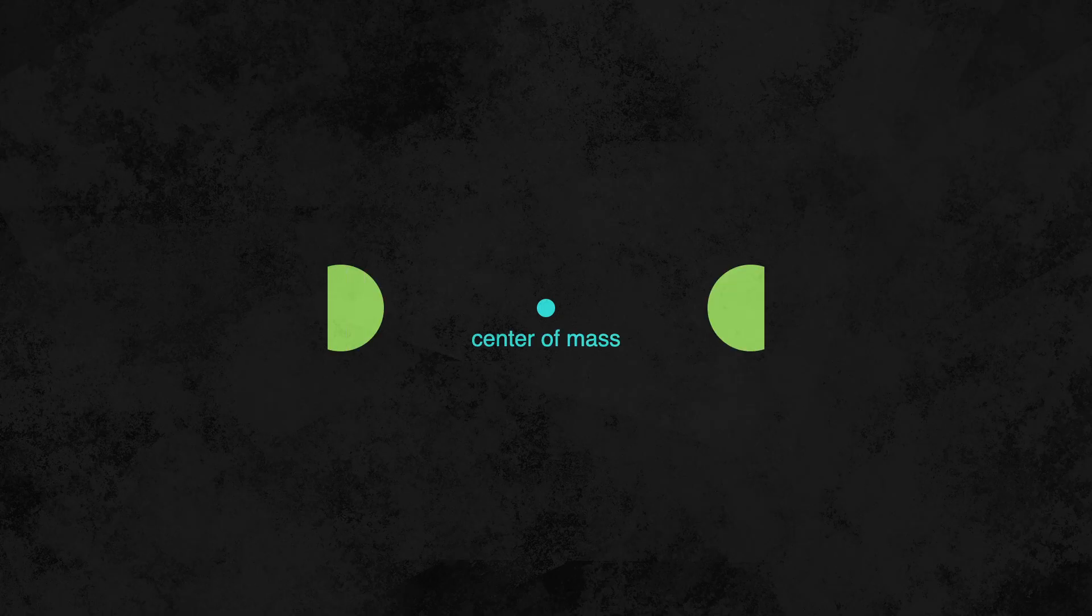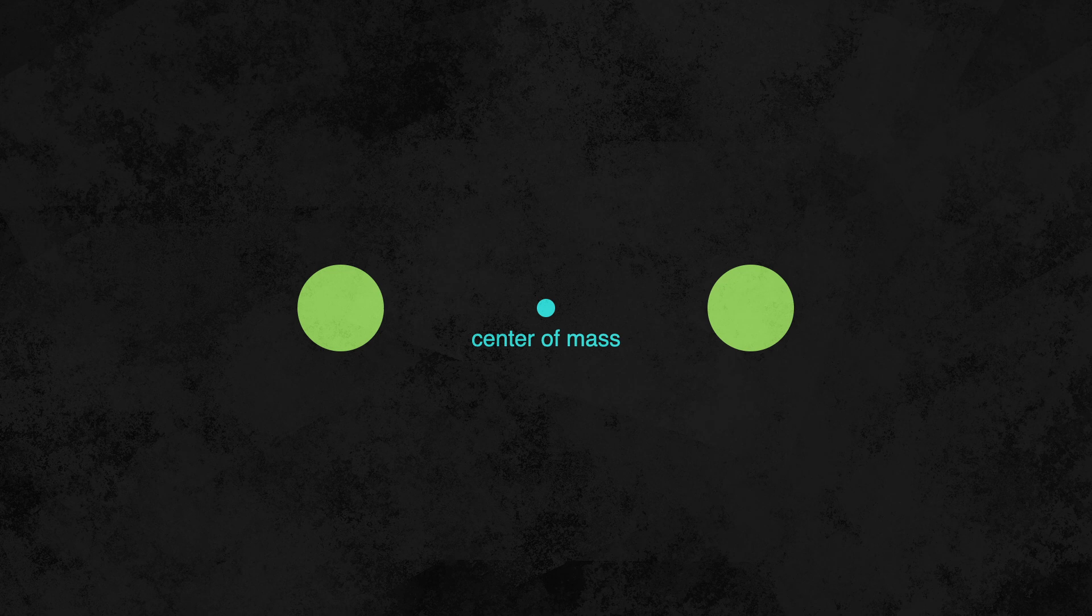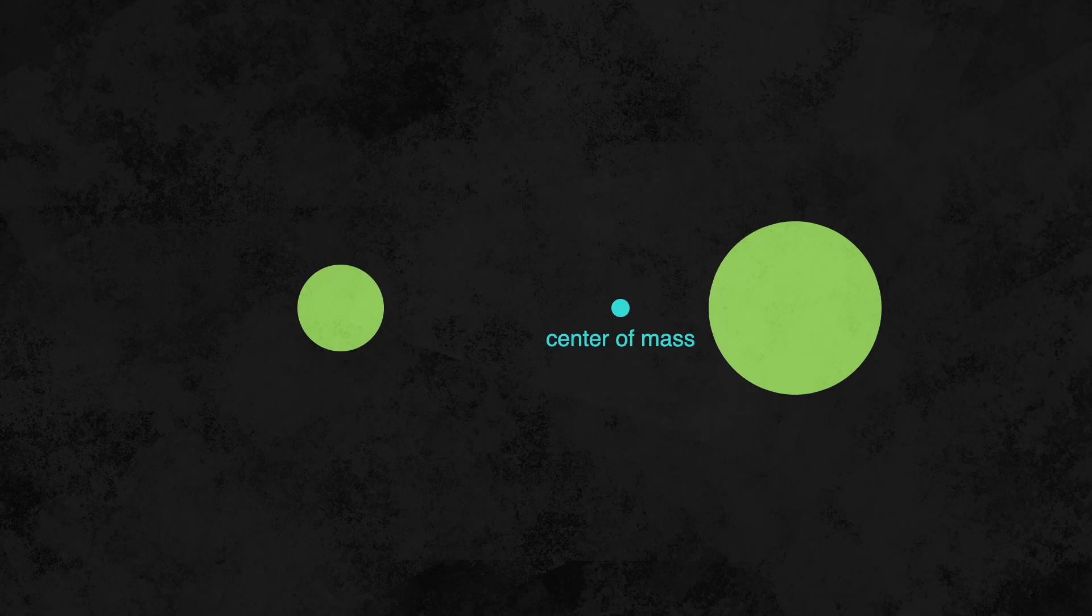This thing is called the center of mass. We measure it by calculating the average position of each object weighted by their mass. This makes sense. The heavier an object is, the more it pulls the center of mass towards itself. The center of mass is kind of like the average position of everything in the system.